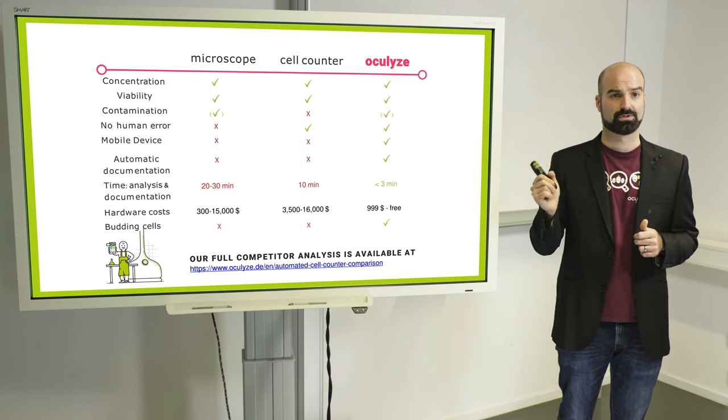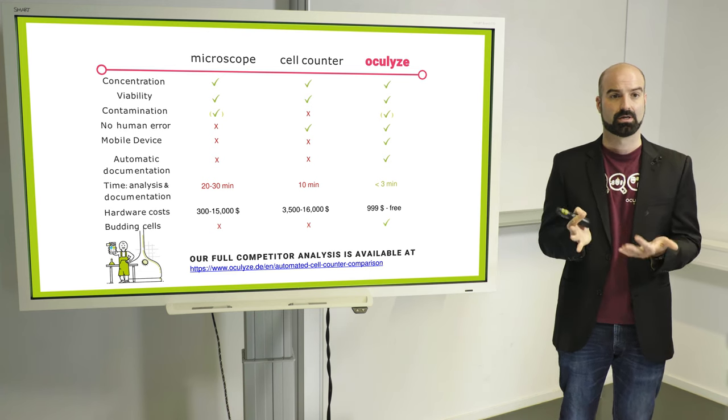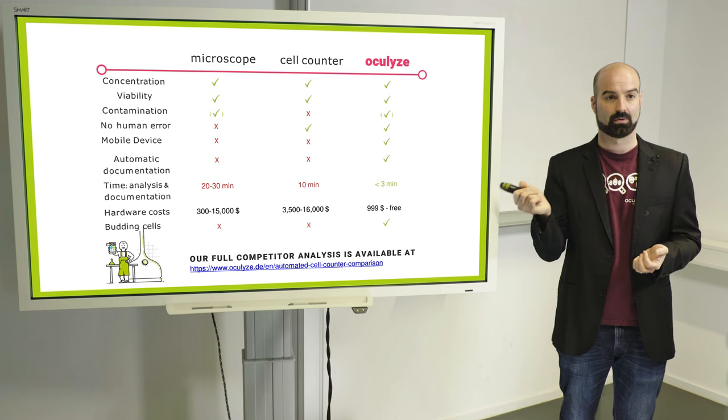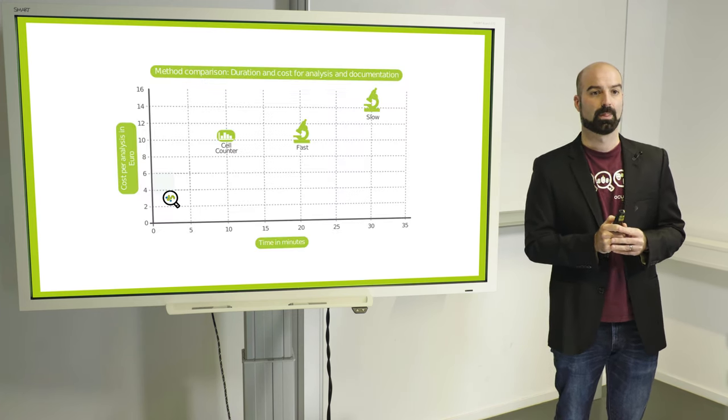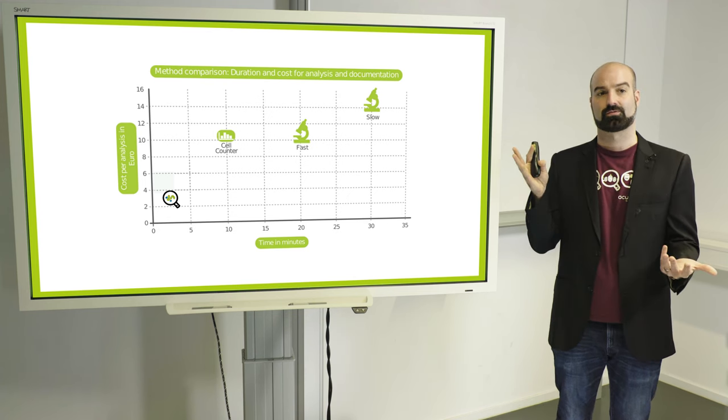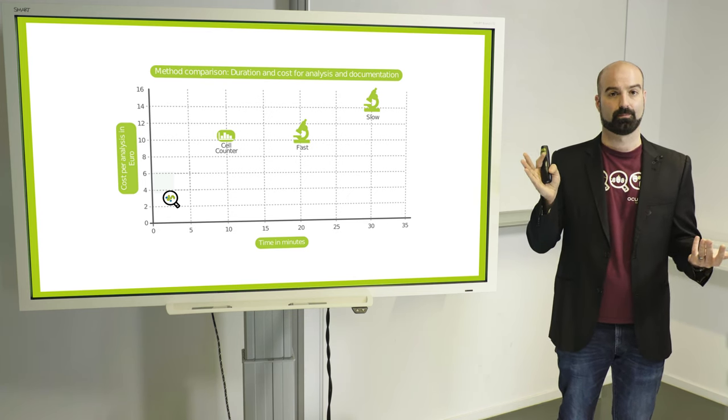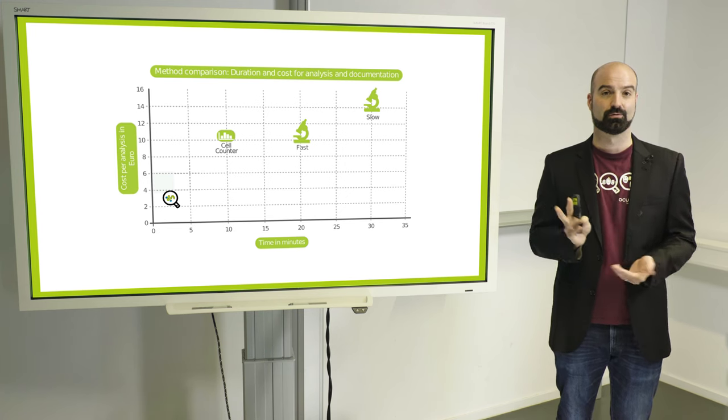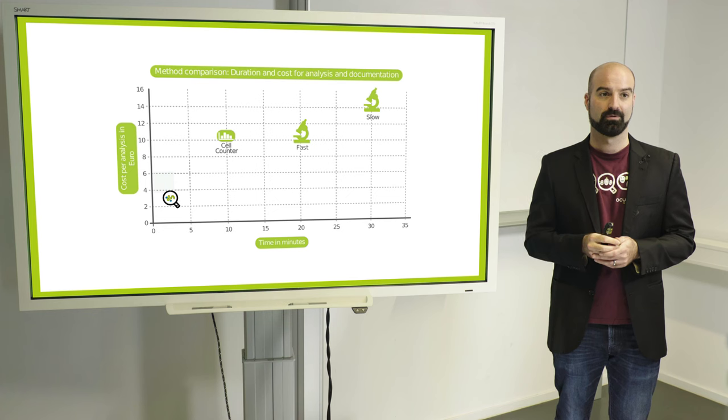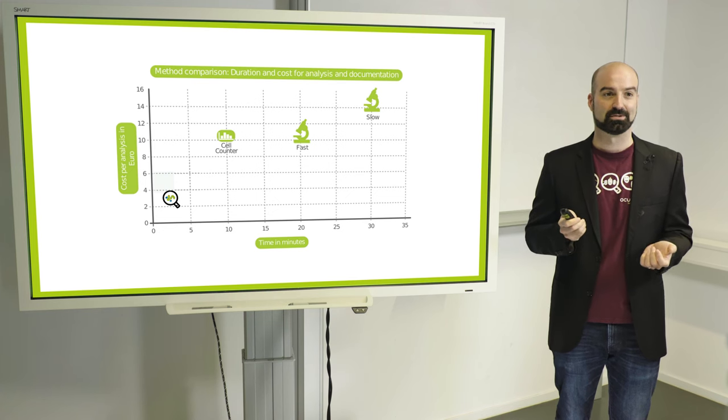We have a full list of our competitors like an analysis that you can request by going to this link, also again in the description of the video. Here it's just in chart form. So the most expensive thing you can do is actually use a microscope, at least if you value your time at all. If you don't, then it's probably the cheapest.